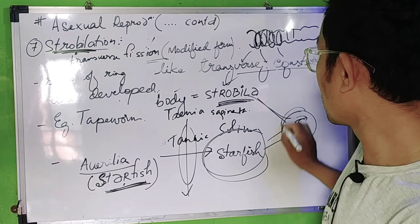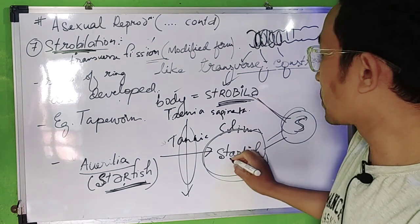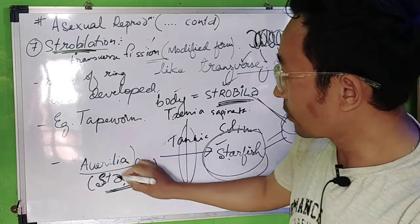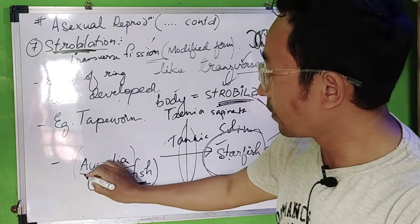So you can remember: S for strobular and S for starfish. For example, starfish — if you are a member of the Orilla.